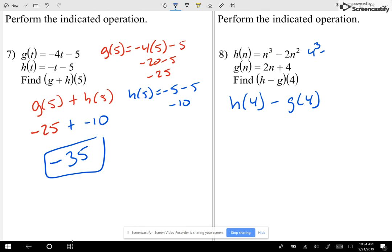h of 4, I have 4 to the 3rd minus 2 times 4 squared. And 4 to the 3rd is 64 minus 2 times 16. I had to do the square before I multiplied. So I have 64 minus 32, which we're just going to call 32.